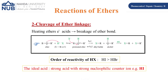When ethers are heated with HX (where X is Br or I), cleavage of the ether bond occurs. Protonation occurs first, then heating causes cleavage of the ether linkage, giving an alkyl halide and an alcohol. Heating again with another molecule of HX converts the alcohol to a second alkyl halide. The net result is two alkyl halide molecules. The order of reactivity is HI > HBr, as HI provides both a strong acid and a strong nucleophilic iodide ion.